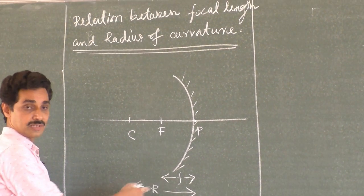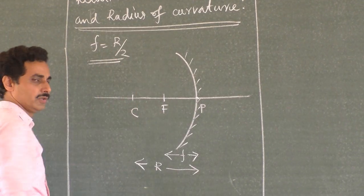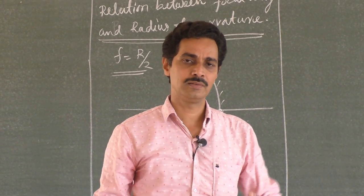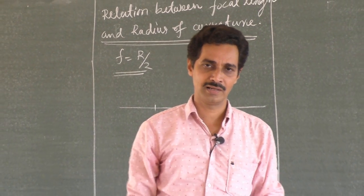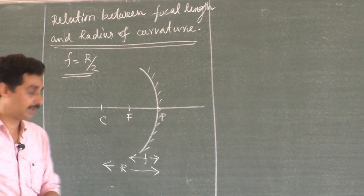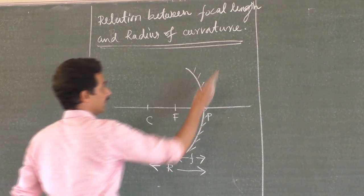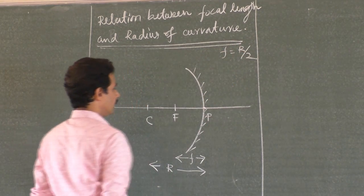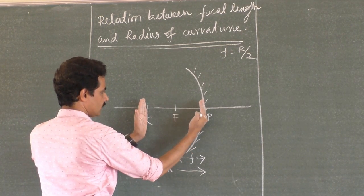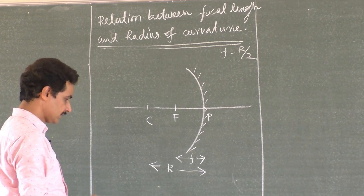My job is to find the relation between F and R. At the beginning I'll write what we are going to derive: F = R/2. Every time you study a derivation, you must know where you have to reach at the end. Focus is always at the center of the line joining center and pole — at the middle — so F should be half of R.